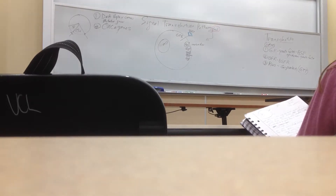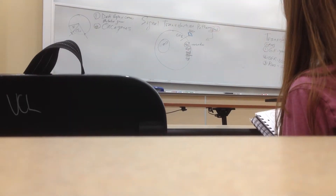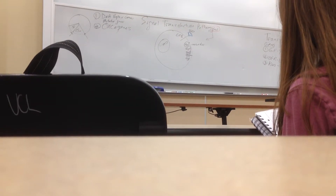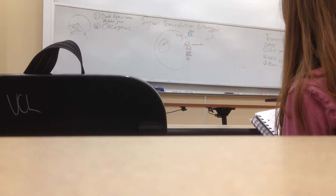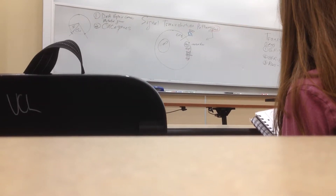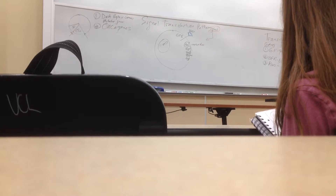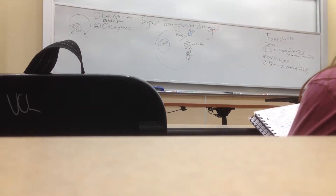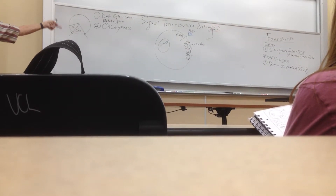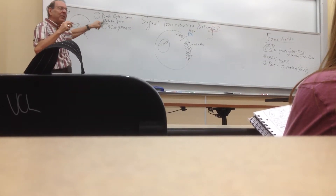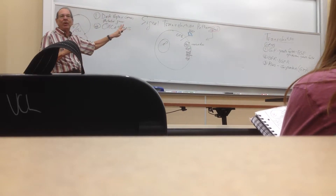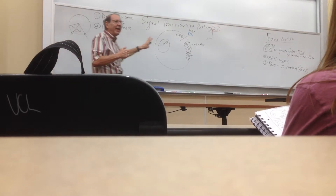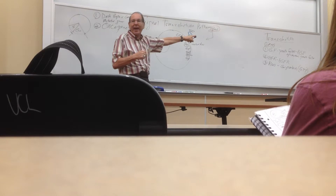The binding of the growth factor changes RAS from inactive to active — the signal is now inside the cell. All we have to do next is get it into the nucleus. It's an exchange mechanism, not a phosphorylation. The growth factor makes the receptor active; the receptor then makes RAS active. Information is passed from the gland to the receptor; the receptor causes RAS to become active. We're over halfway through the signal transduction pathway.